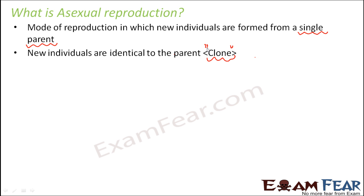Let's compare this with human beings, where we have the sexual mode of reproduction. There we have two parents — mother and father — and the new individual, the son or daughter, does not resemble the parents exactly. The child might have certain features of the mother and certain features of the father, but is not going to be exactly identical to either of them. But in asexual reproduction, the new individuals formed are exactly identical to the parent. This is also a faster mode of reproduction — sexual reproduction takes more time and does not produce too many new organisms at once, whereas asexual reproduction very quickly produces more and more organisms.